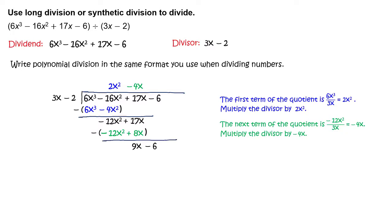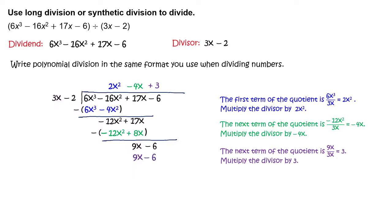Bring down negative 6. The next term of the quotient is 9x divided by 3x, which equals 3. Multiply the divisor by 3 to get 9x minus 6. Subtract and simplify to get 0.